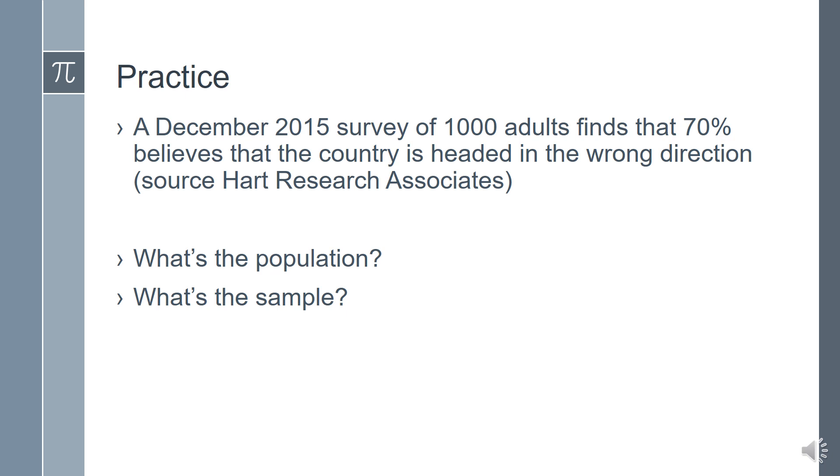Okay, here's an example problem. You don't have to write down the example problem itself, but please write down the answers that I'm going to go through to the population and the sample. This will help you on your Schoology assignment number one. A December 2015 survey of 1,000 adults finds that 70% believe the country is headed in the wrong direction. What is the population and what is the sample? The population for this particular example is all adults in the country. Notice the key thing: all adults in the country. 1,000 adults surveyed is your sample. That numerical value of how many adults actually were surveyed.